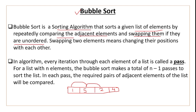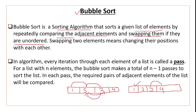Next, compare 5 and 2. Since 2 is smaller than 5, they swap. After swapping: 1, 2, 5, 4. Then compare 5 and 4 — again, 4 is smaller than 5, so they swap. The result becomes 1, 2, 4, 5. Swapping two elements means exchanging their positions with each other.